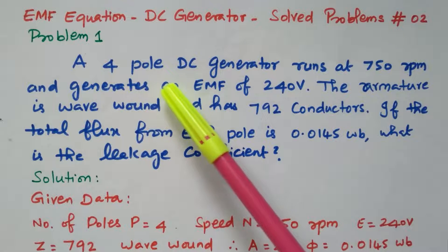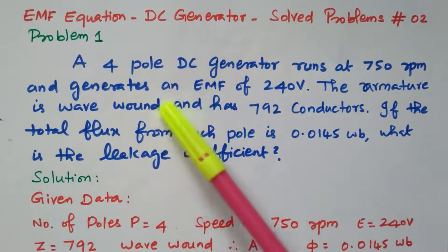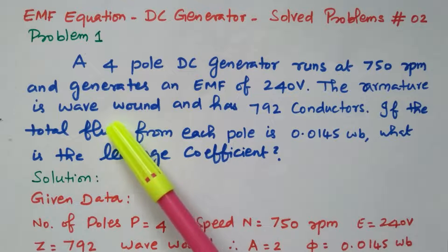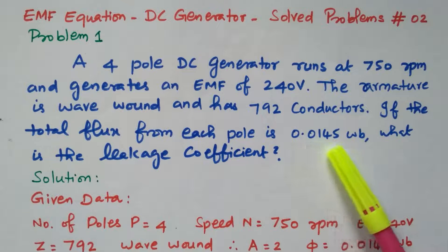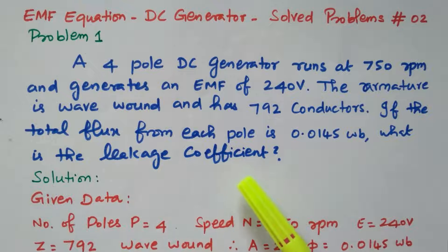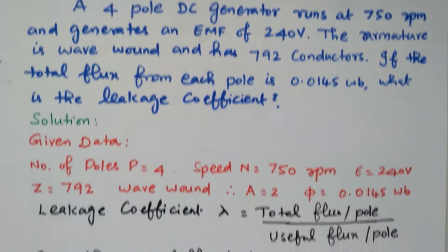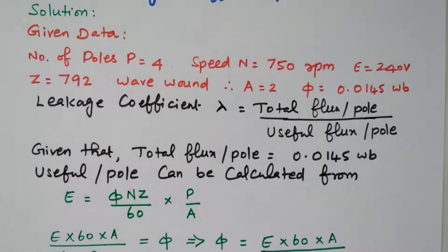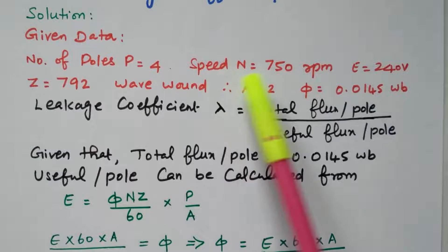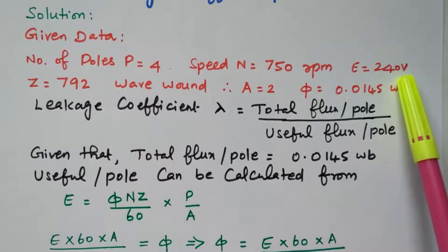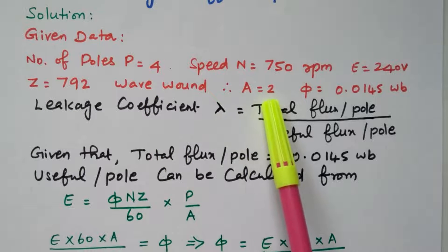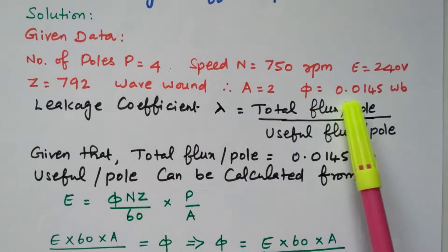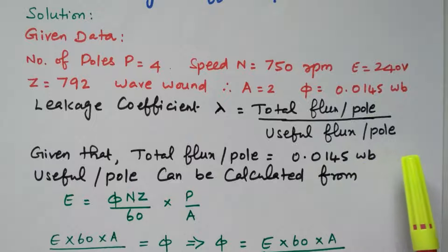A four-pole DC generator runs at 750 RPM and generates an EMF of 240 volts. The armature is wave connected and has 792 conductors. If the total flux from each pole is 0.0145 Weber, then what is the leakage coefficient? The number of poles is 4, speed is 750 RPM, induced EMF is 240 volts, number of conductors Z equals 792. It is wave connected, so the number of parallel paths always equals 2. The flux is given as 0.0145 Weber.